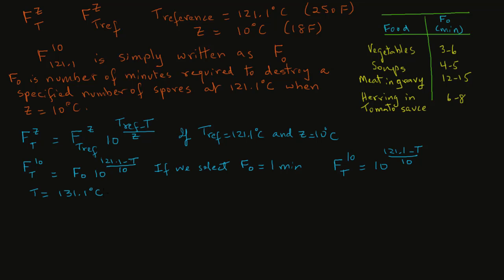If the temperature is 131.1 degrees C, we can substitute the value for T and what we will get is 10 raised to power minus 10 over 10. When you subtract 131.1 out of 121.1, you'll get a negative, so we have 10 raised to power minus 1, or that is 0.1 minute. If we select T of 111.1 degrees C, we will substitute for temperature T 111.1, and now we will get 10 raised to power 10 over 10, which equals 10 raised to power 1, and that is 10 minutes.